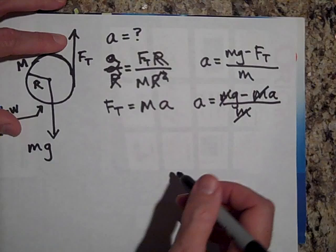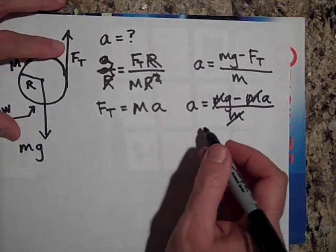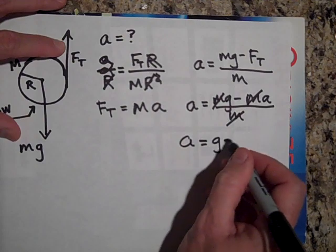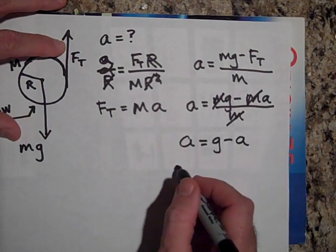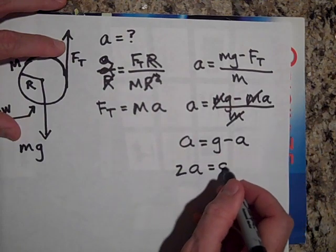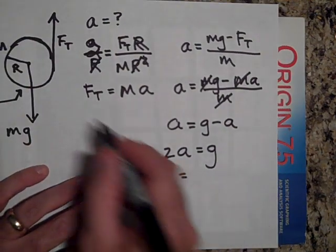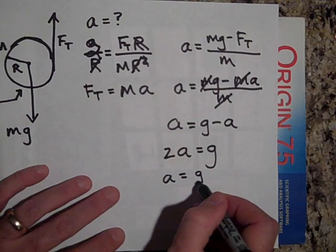So the rate at which this accelerates down is related to alpha, it's A over R. So I can get rid of another R. Apparently FT is equal to MA. So now I can bring that over here. So A equals MG minus FT, but FT is MA, all over M. Boom, boom, boom, and so A equals G minus A. So bring that A on the other side. 2A is equal to G. So therefore the acceleration of this can is going to accelerate down at G over 2.